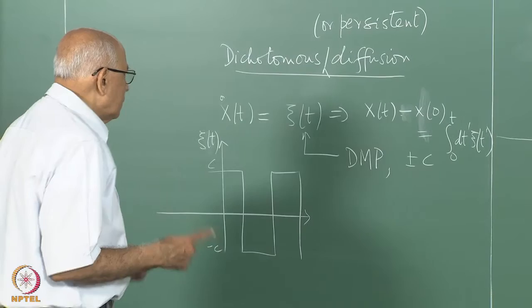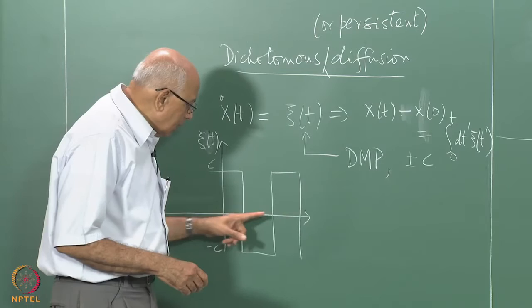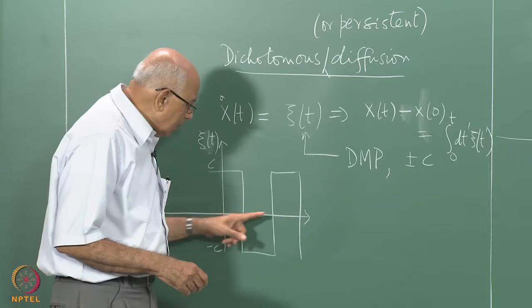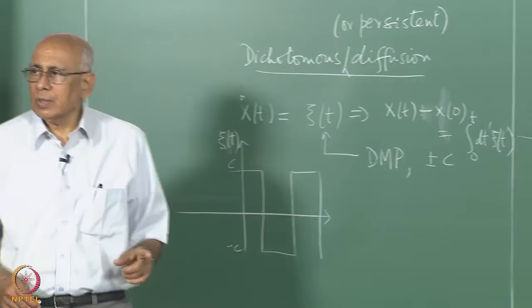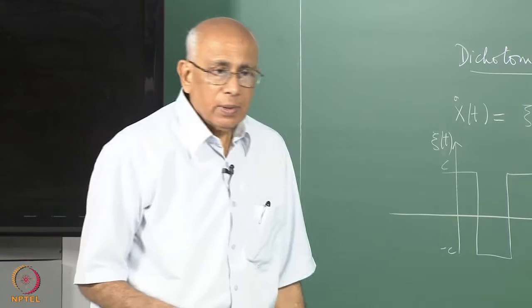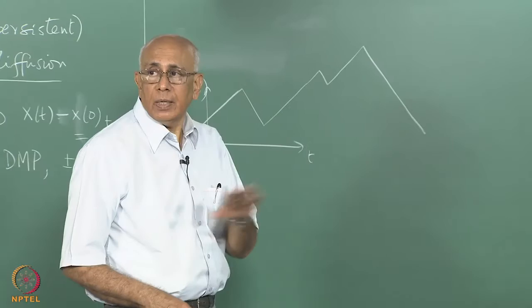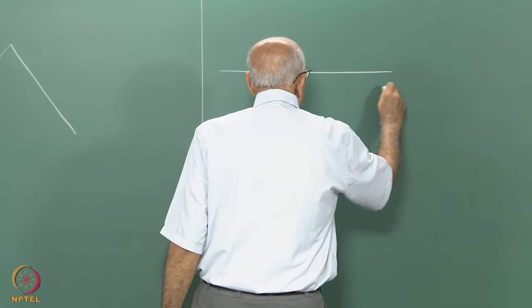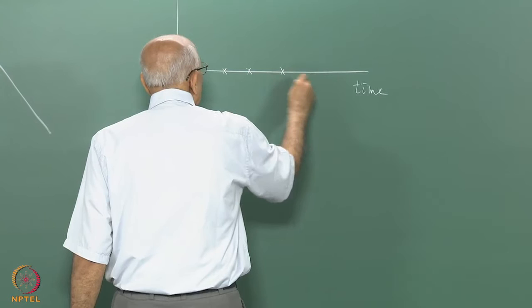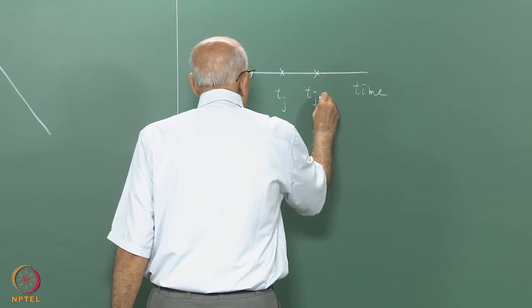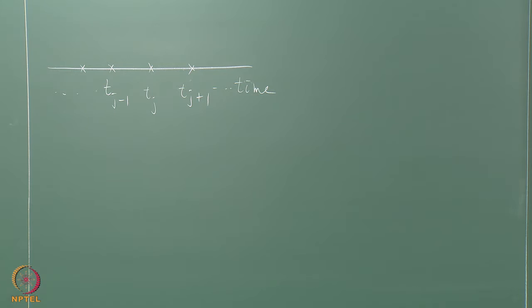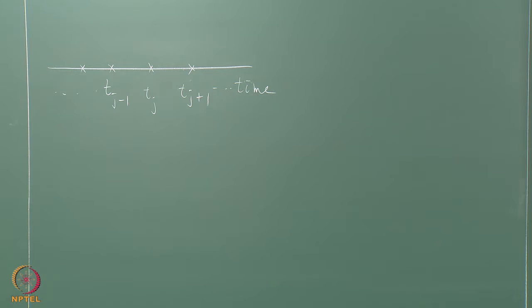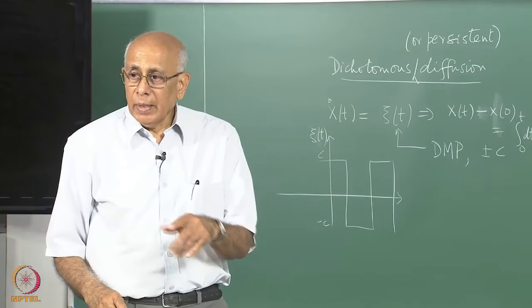These points where the process undergoes reversal are supposed to form an uncorrelated Poisson sequence of points, and we have already studied what a Poisson pulse process does. As a digression, let me remind you of the Poisson sequence: on the time axis you have epochs t_j that are completely uncorrelated with each other. The statement is that in any finite interval of time, the probability that you have n of these crossings is Poisson distributed with some mean rate.